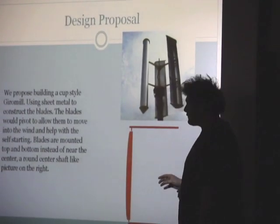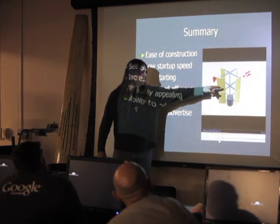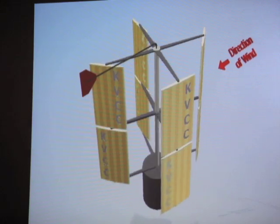The next groups presented gyro mill designs with Savonia style cupped blades with pivoting blades. This kind of self-articulating gyro mill is supposed to work at a low wind speed.